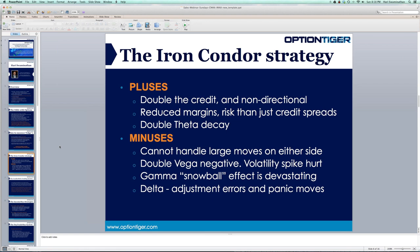On the flip side, the iron condor has a lot of negatives. One of the big negatives is that it cannot handle a sudden large move on either side — it might start delta neutral, but a large move to the upside or downside can hurt it, and you'll see paper losses. It's also double vega negative, so a spike in volatility will hurt.